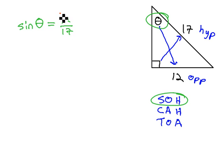We can quickly calculate this 12 over 17 as a decimal by dividing, so we find out that the sine of theta, our missing angle, 12 divided by 17 is approximately 0.706.